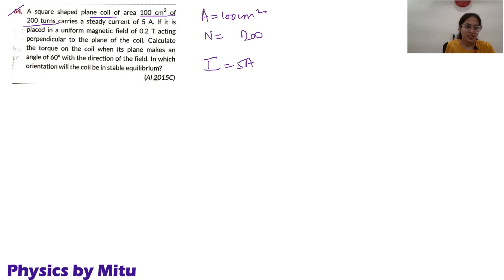If it is placed in a uniform magnetic field of 0.2 Tesla acting perpendicular to the plane of the coil, calculate the torque on the coil when its plane makes 60 degrees with the direction of the field.